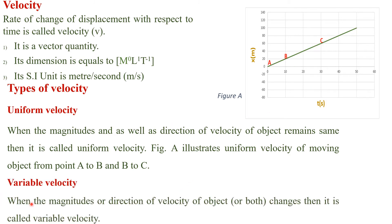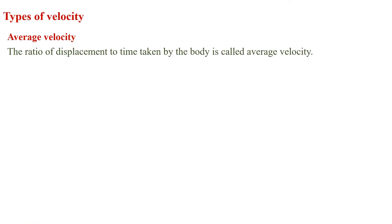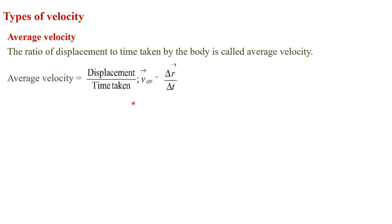Variable velocity: when the magnitude or direction of velocity of an object, or both, changes, it is called variable velocity. Average velocity: the ratio of displacement to time taken by the body is called average velocity. Its formula is V_avg = Δr / Δt, where Δr is the change in displacement from the final point to the initial point, and Δt is the time taken.